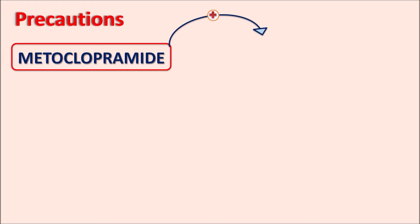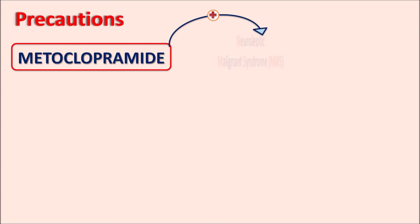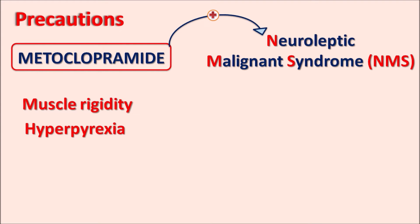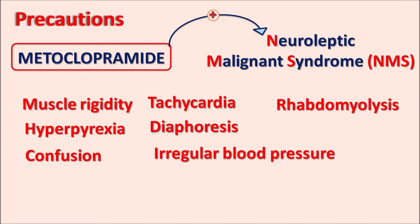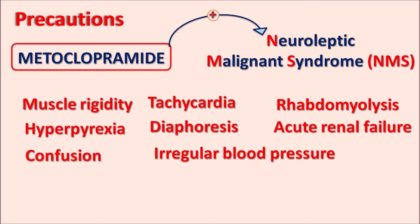Another important precaution is that metoclopramide can produce neuroleptic malignant syndrome (NMS). This condition involves excessively raised body temperature (hyperpyrexia), muscle rigidity, confusion, altered mental status, and autonomic symptoms such as tachycardia, diaphoresis (increased sweating), irregular blood pressure and pulse, rhabdomyolysis (dissolution of muscle fibers), and acute renal failure. The hyperpyrexia and muscle rigidity can also produce heat stroke in patients.